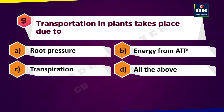Transportation in plants takes place due to: A. Root pressure, B. Energy from ATP, C. Transpiration, D. All the above.